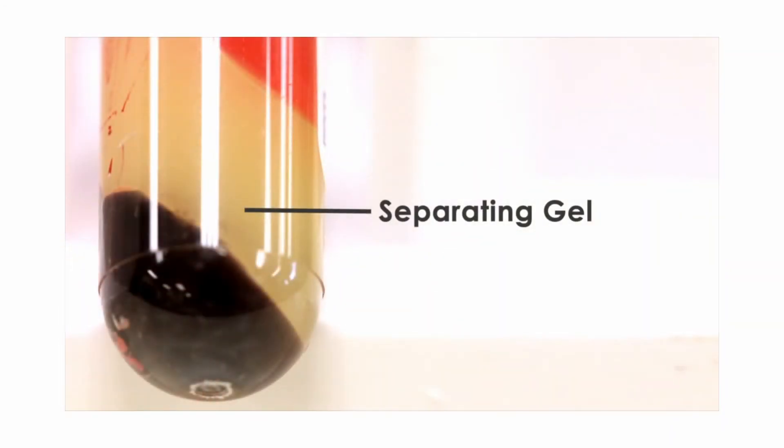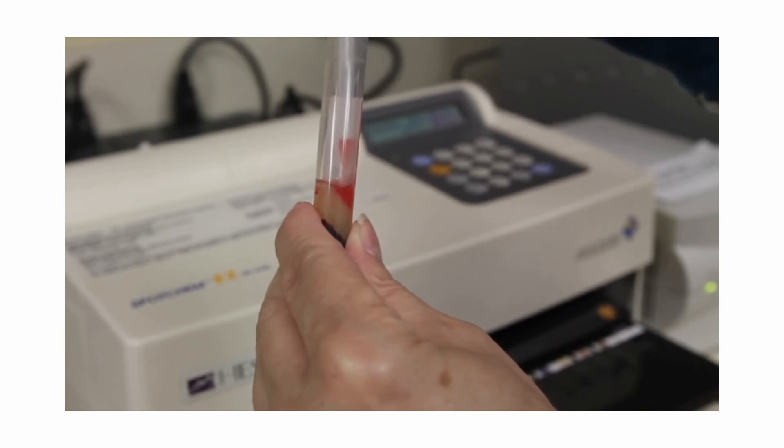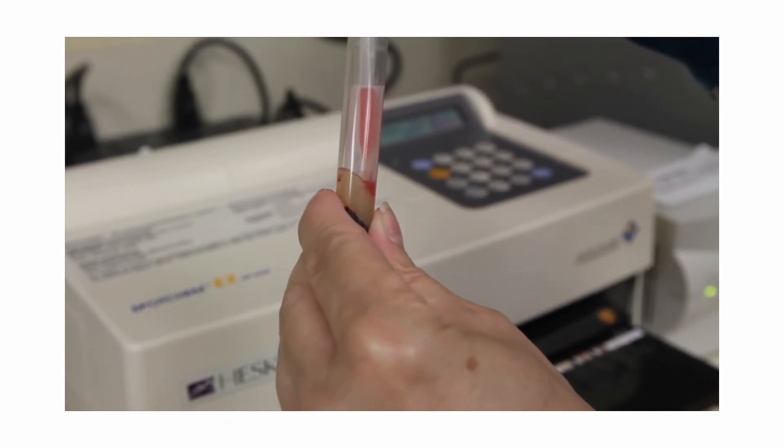Some red-topped tubes contain a separating gel that forms a layer between the cells and serum upon centrifuging. This often makes the serum more stable for transport or a bit easier to remove from the tube.